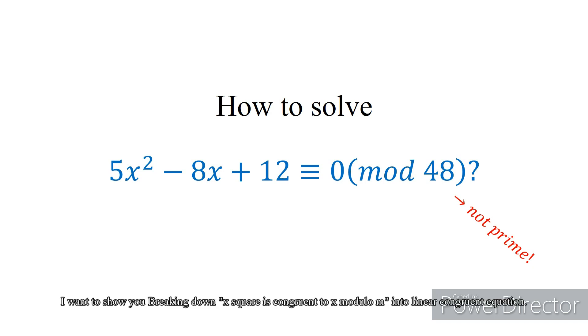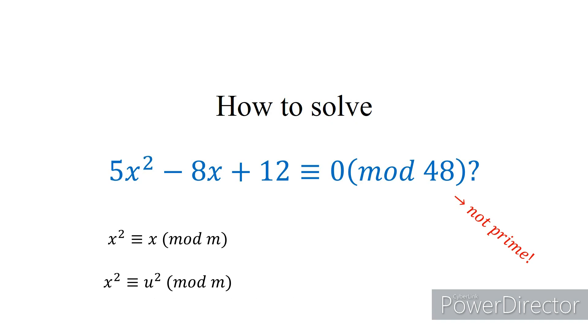I want to show you breaking down x² ≡ x (mod m) into linear congruent equations and apply it to x² ≡ u² (mod m), and solve it. First of all, let's solve x² ≡ x (mod m). We will call it as R equation.